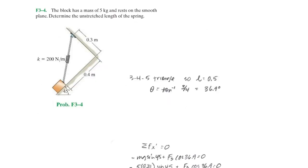Now let's do a fundamental problem: a block of mass 5 kilograms resting on a smooth (frictionless) inclined plane. We're looking for the unstretched length of the spring. We have a 45-degree incline angle, and an internal angle theta at the spring attachment. This is a 3-4-5 triangle, so using the tangent function — tan(theta) = opposite over adjacent — we get theta equals 36.9 degrees.